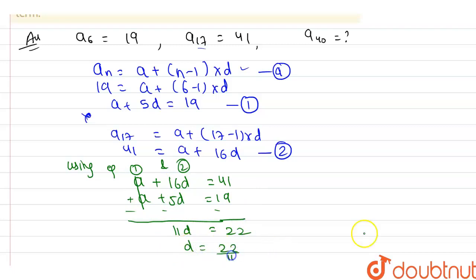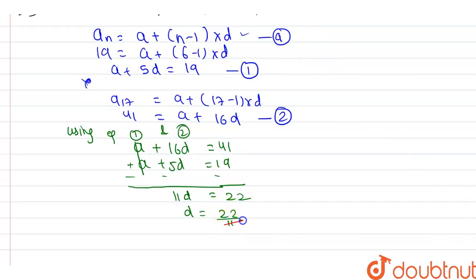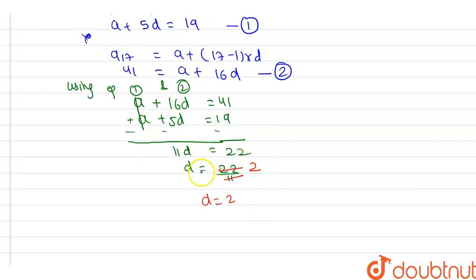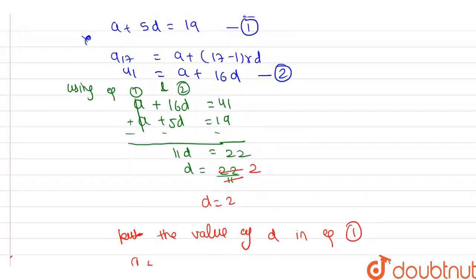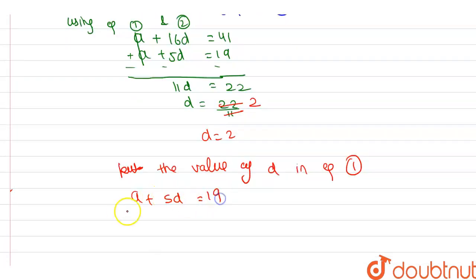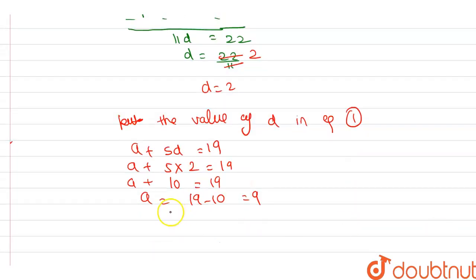From this, d = 22 ÷ 11 = 2. Now substituting d = 2 into equation one: a + 5(2) = 19, so a + 10 = 19, giving a = 19 − 10 = 9. So the first term a equals 9.